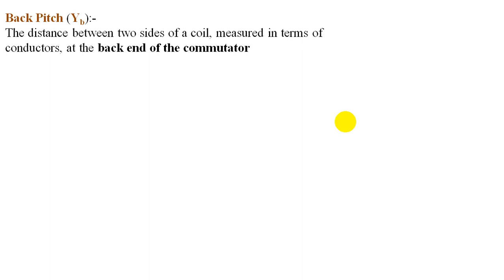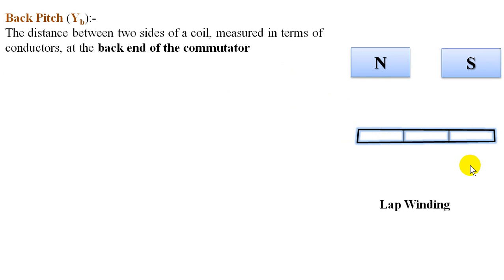Let us see a lap winding. This is your commutator — we have three commutator segments, a north pole and a south pole. The winding starts from one commutator segment and ends at the adjacent commutator segment, moving in a clockwise direction. This is called progressive. For retrogressive winding, the coil lands at segment N minus one. So we have progressive and retrogressive types.